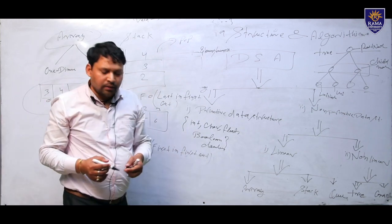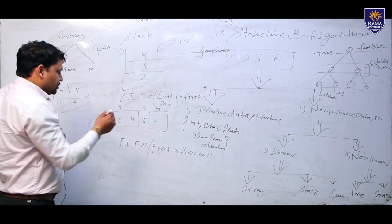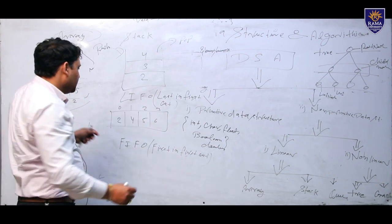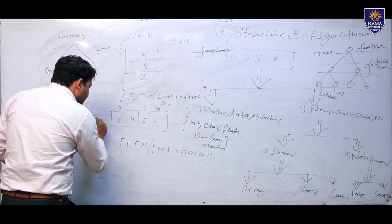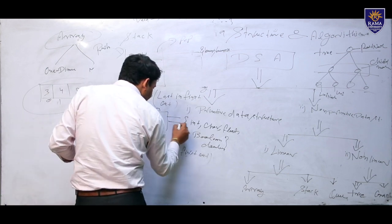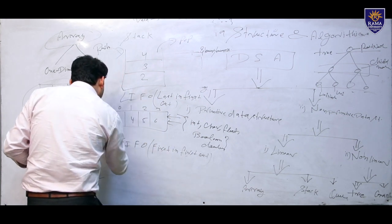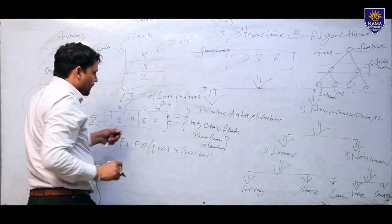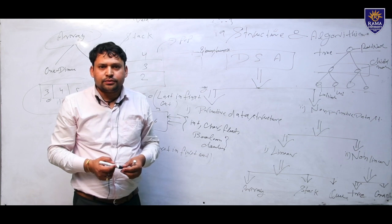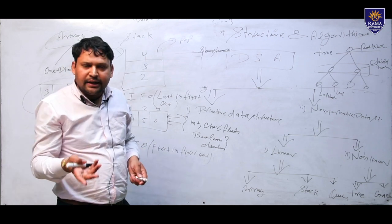It's seen here where values are 2, 4, 5, 6 with index 0, 1, 2, 3. Here push and pop, and here enqueue and dequeue. Enqueue means inserting values in queue, dequeue means deleting values in queue.